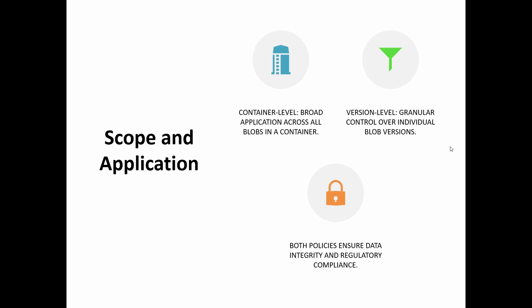Regarding the scope and application of these policies: the container level policy is applied at the container, and automatically all blobs will have that policy applied — you do not need to enable version control for container level policy. However, for version level policy, you need to first enable versioning on the blob storage, and then it can be applied on the storage account, container, or blob versions. Both of these policies ensure data integrity and regulatory compliance.